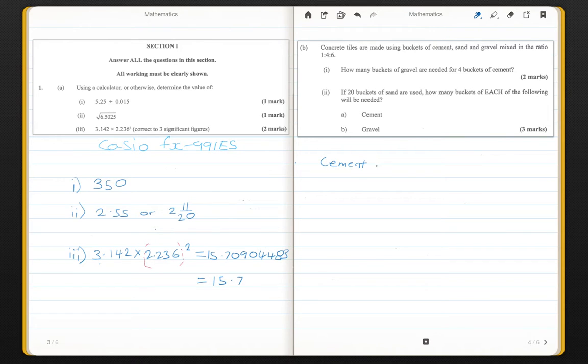So, cement, sand, gravel. So we have the ratio of 1, 4, 6. So for every 1 bucket of cement, you need 4 buckets of sand and 6 buckets of gravel.